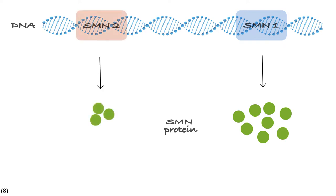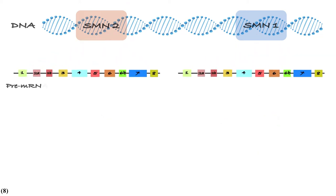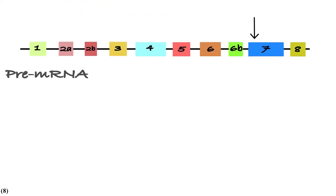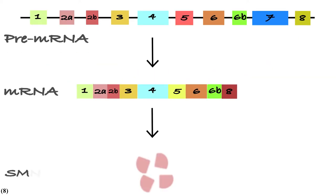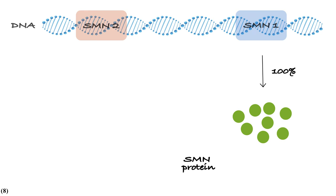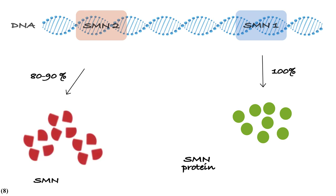The other gene responsible for making the SMN proteins is the SMN2 gene, but it can't make enough SMN protein. To understand why, we should take a closer look at the SMN pre-mRNA structure. Both SMN1 and SMN2 pre-mRNAs are nearly identical and contain 10 exons. But there's a small difference in the sixth position of exon 7 on the SMN2 gene that triggers the skipping of exon 7 from the final mRNA. This new mRNA is translated to the SMN delta 7 protein, which is unstable and degrades very fast in the cells. So the SMN2 gene, about 80–90% of the time, encodes the SMN delta 7 protein, and only about 10–20% of the time makes a full-length SMN protein.